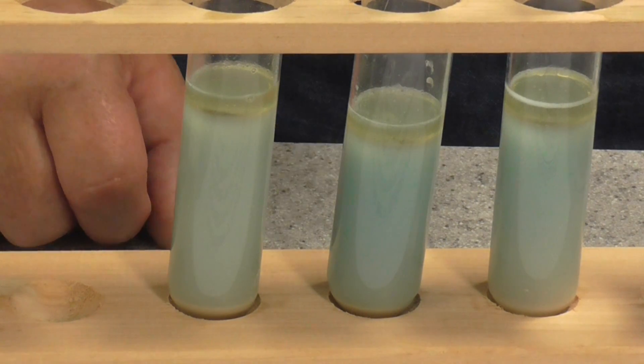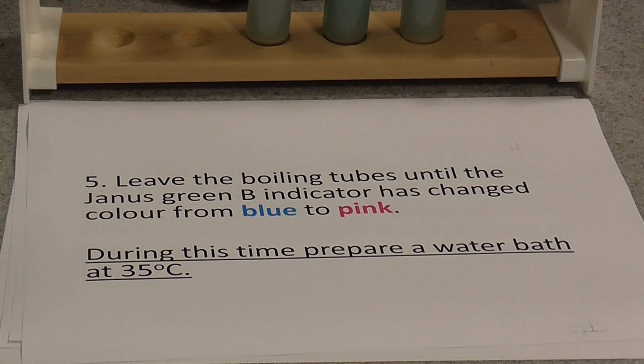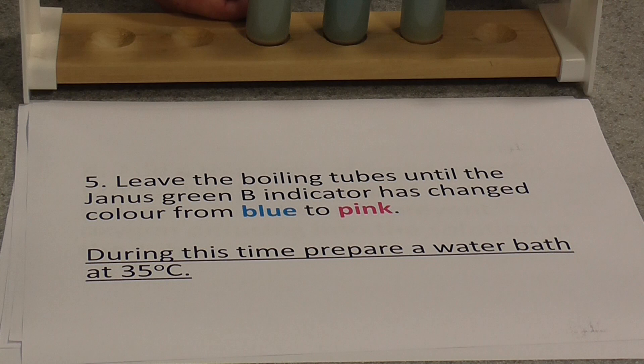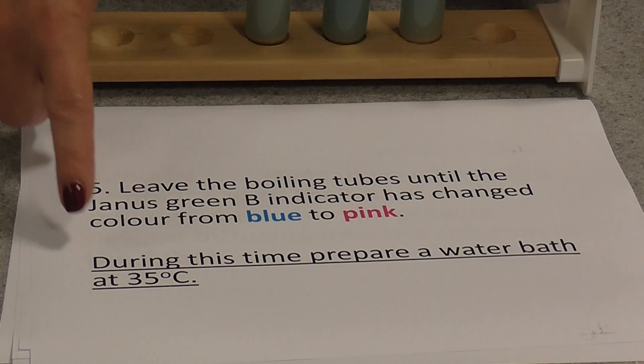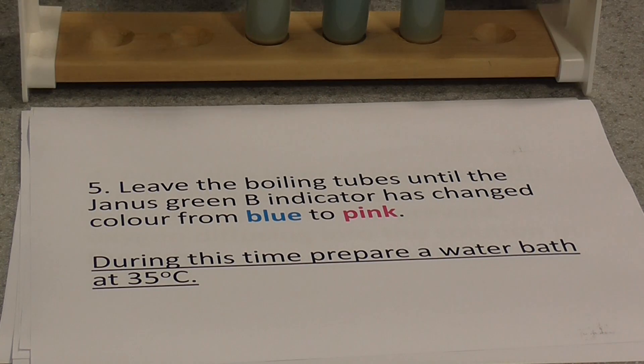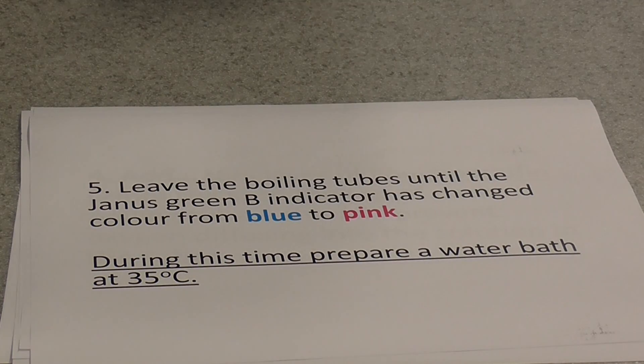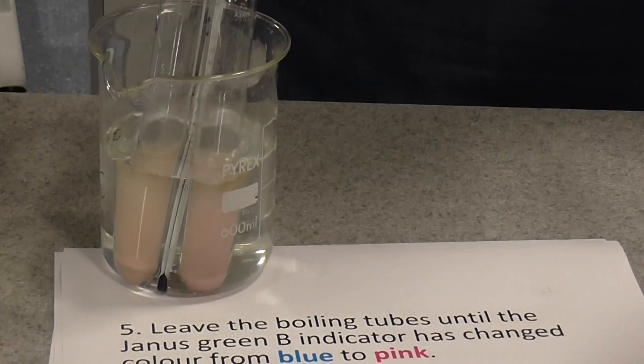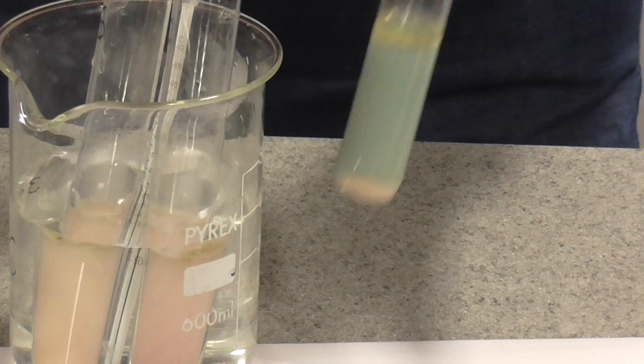Now, the next thing you need to do then is put these tubes to one side and actually wait until they change color. The yeast will now be respiring using the sugars, and will be using the oxygen, and eventually they'll use all of the oxygen in there, and the indicator will change from its bluey color to the pink to show that conditions are anaerobic. Now, this will take quite a bit of time, but you can speed it up by putting it in a water bath at 35 degrees. So I've actually done this bit earlier, and after a period of time, you'll see the color change there. You can see the Janus B indicator has changed to pink, and that shows us that we've actually got anaerobic conditions in these tubes here.